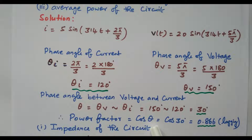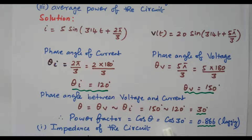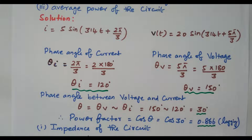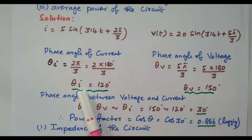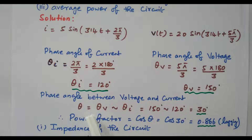Theta is the angle between current and voltage, which we know is 30 degrees. So cos(θ) is the power factor, that is cos(30°) = 0.866 lagging, because in an inductor circuit, current always lags the voltage. From the voltage and current equations, we calculated the phase angles and used them to find the power factor.